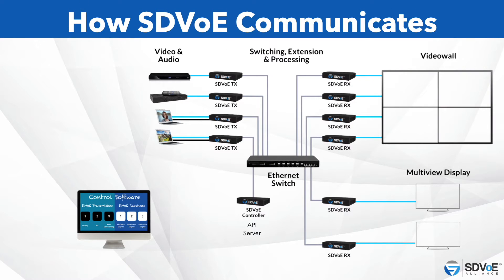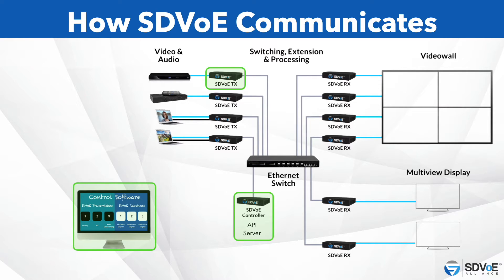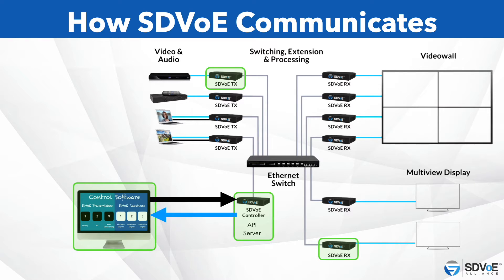Let's take a quick recap of what happens when a command is sent from the client user interface. In this example we're using a touchscreen controller which contains software that uses SDVoE API commands to tell the API to start an AV stream from a source device connected to transmitter A and send it to a display connected to receiver B. The command is sent to the SDVoE server, which we commonly refer to as the SDVoE controller, and once received, the API server will send a response back notifying the client that the command has been received.